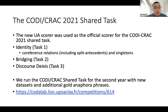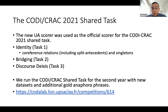The scorer has been used as the official scorer for the CODI-CRAC shared task, both last year's and this year's — a shared task on the dialogue domain for coreference and beyond. There are three different tasks: first is identity, which includes coreference relationships, singletons, and split antecedents; the second is on bridging reference; and the third is on discourse deixis. This year we introduced a newly annotated dataset as well as additional code anaphora phrases. If you are interested, you can have a look at our CODI-CRAC page for more details.